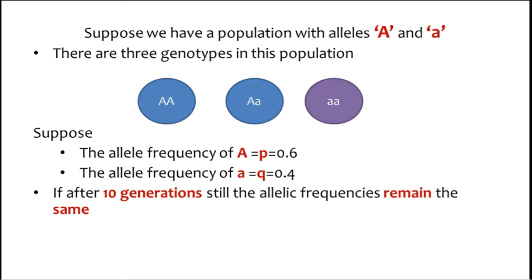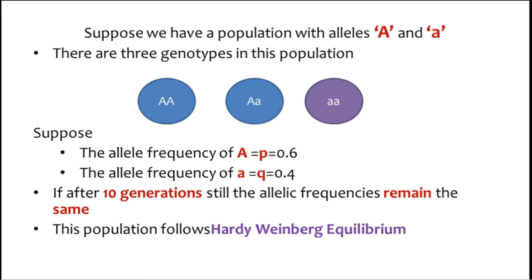If these frequencies of 0.6 and 0.4 remain constant for generations — for example, if after 10 generations the allele frequencies remain the same — then we can say that this population follows Hardy-Weinberg Equilibrium, which means evolution is not occurring. The disturbing factors such as mutation, genetic drift, natural selection, and gene flow are absent, and there is no variation in this population.